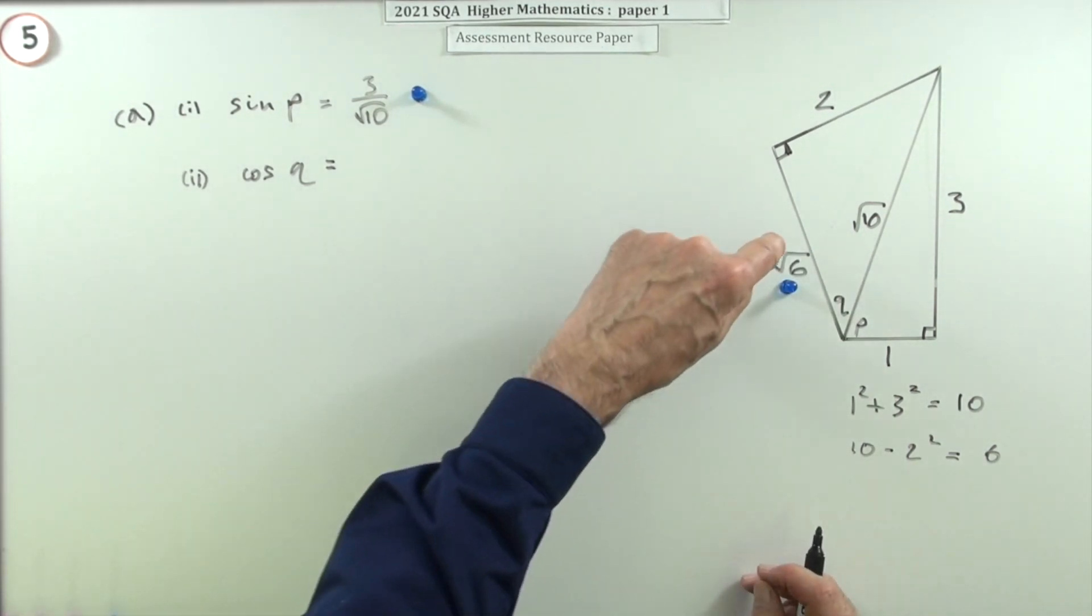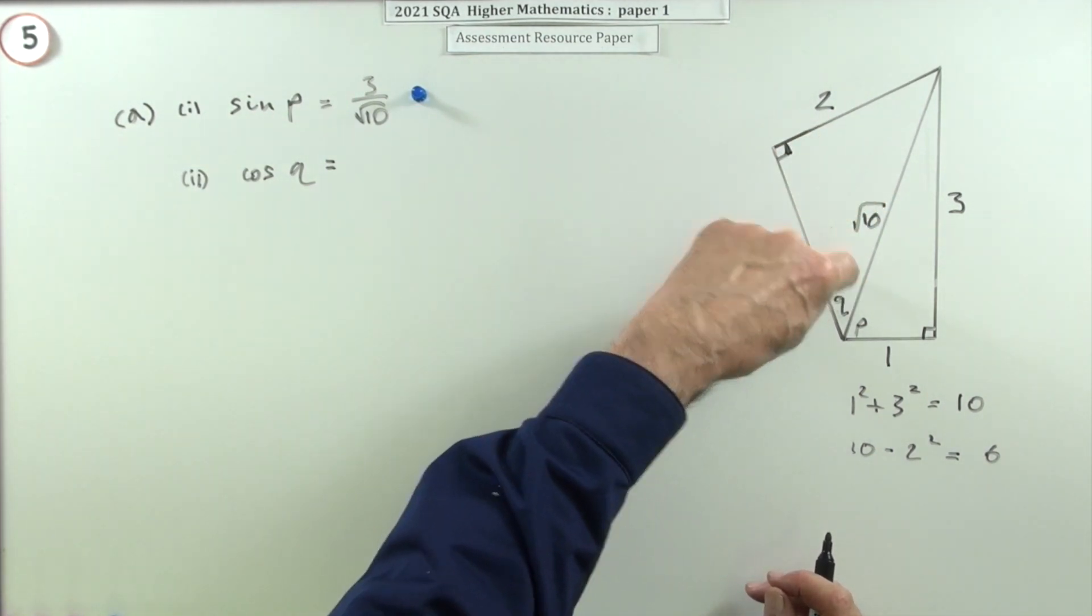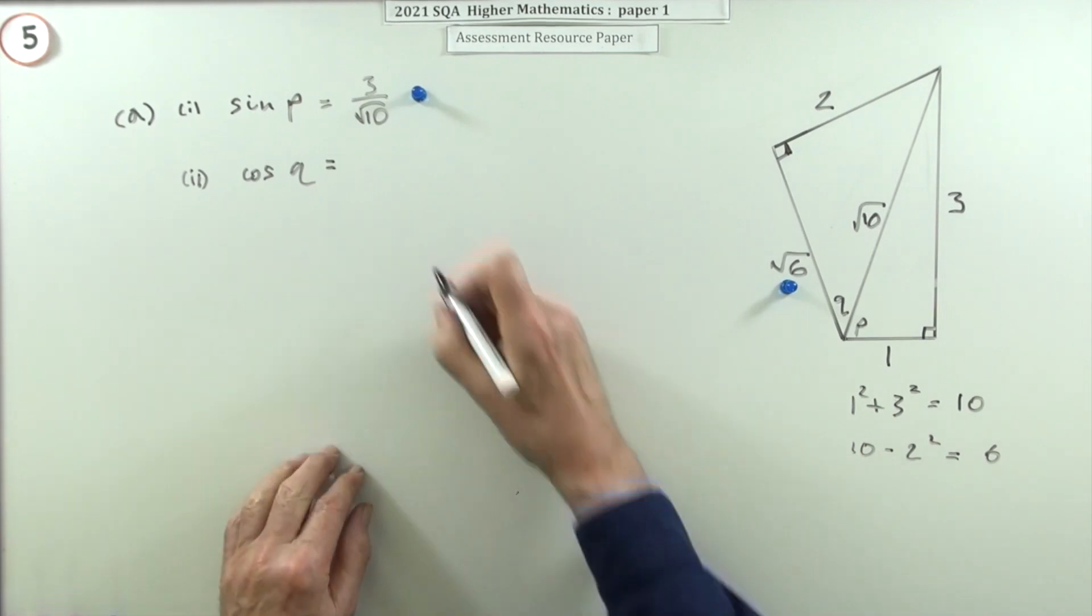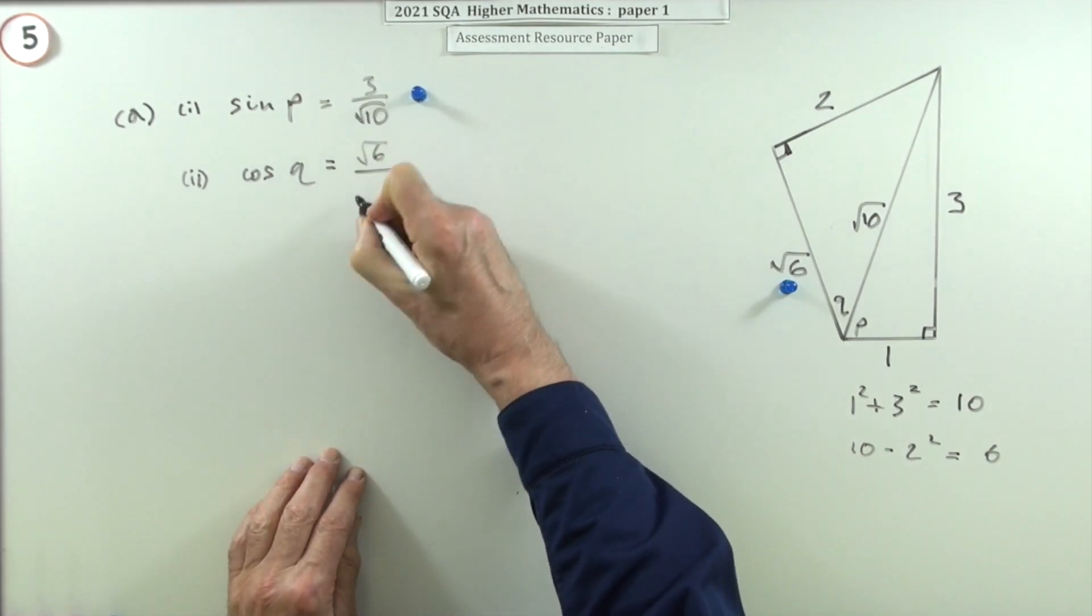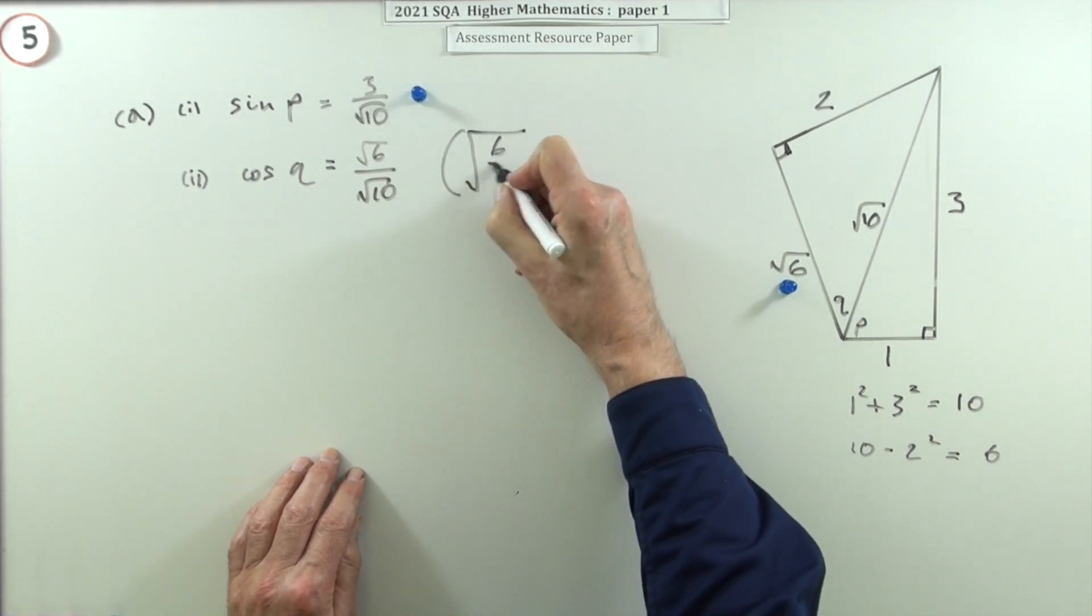So what's the cosine? The cosine is the adjacent over the hypotenuse, the one next to the angle over the biggest side. So that's going to be √6/√10. You could write a big square root with 6/10, but you can't leave it like that because that can be simplified. So that's the same as √3/√5.